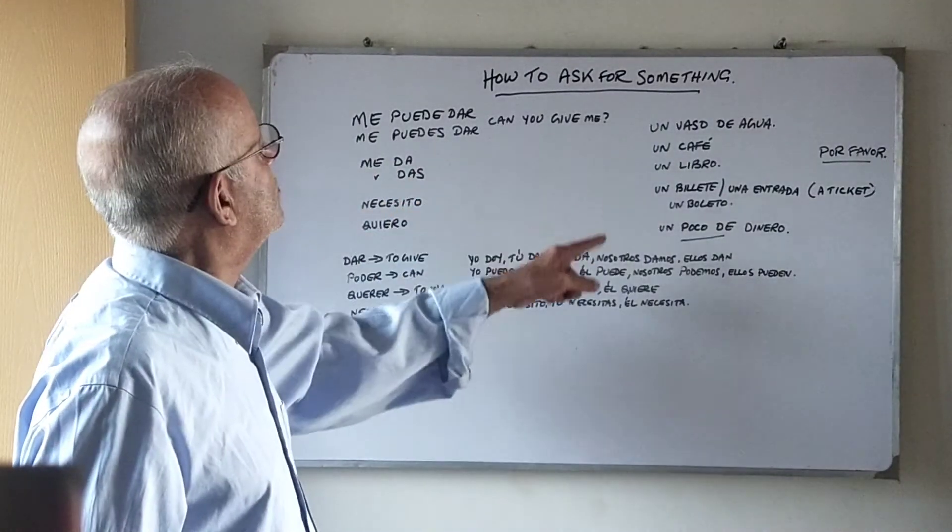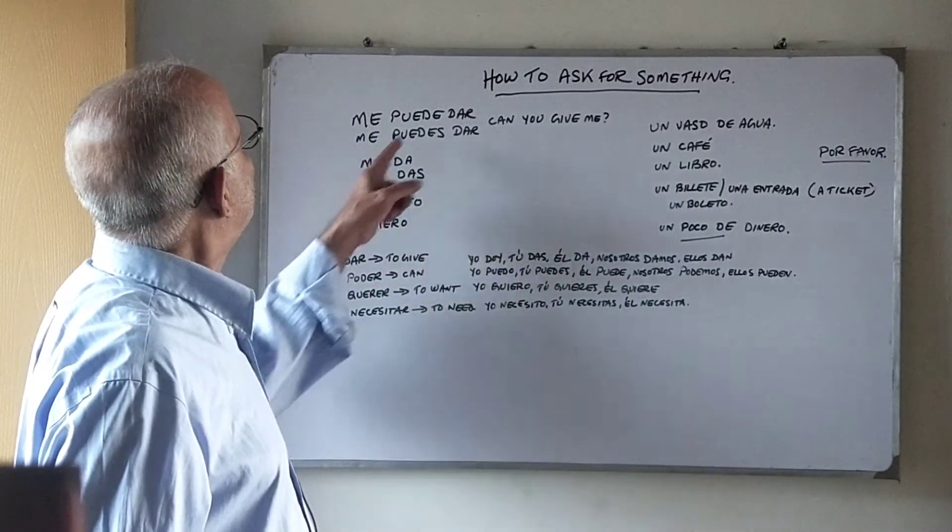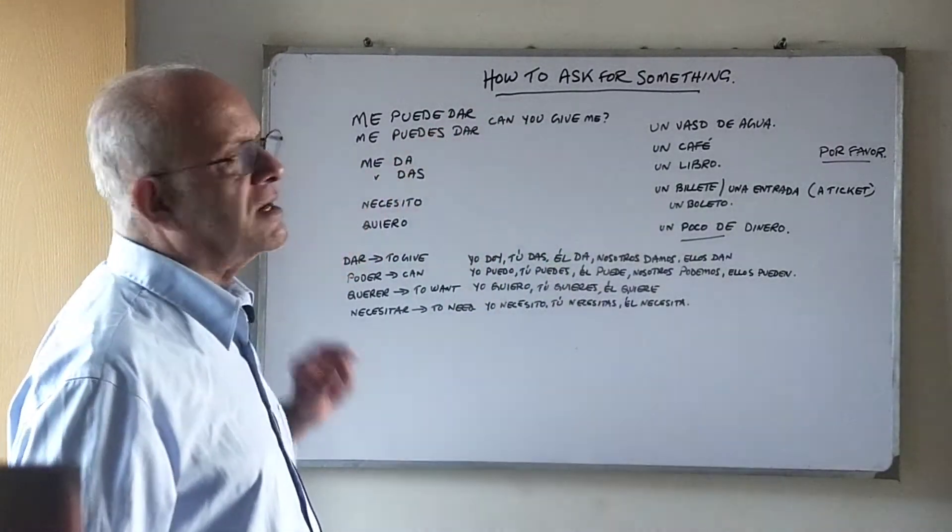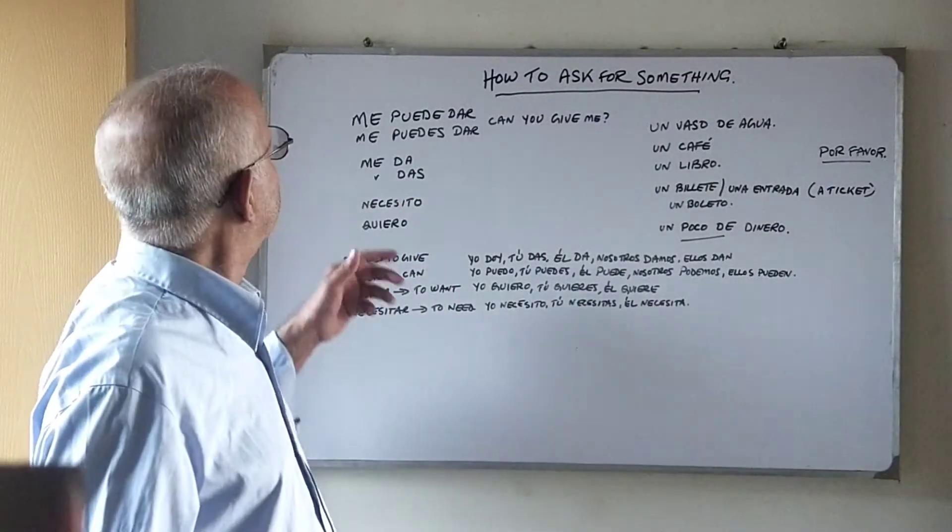So this is one way you can ask for something. Or you can just say avoiding the puede, you can say me da, you can use the word dar in the order formation. Me da, give me. Or me das, give me.